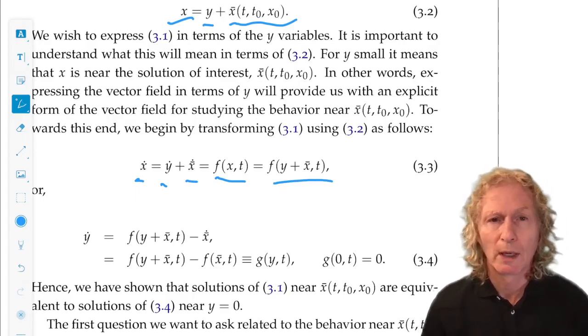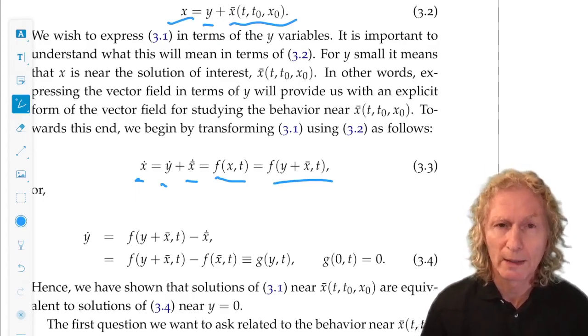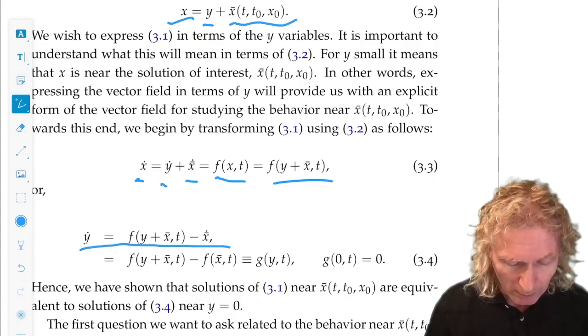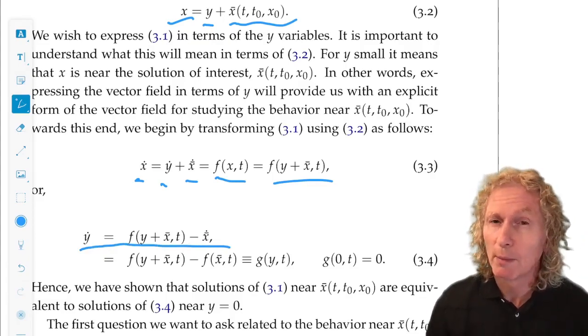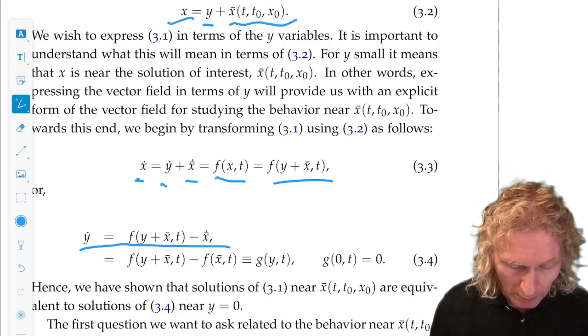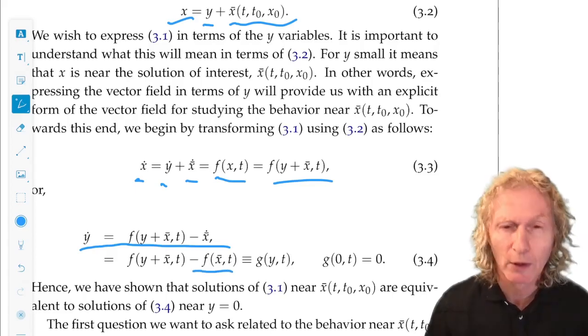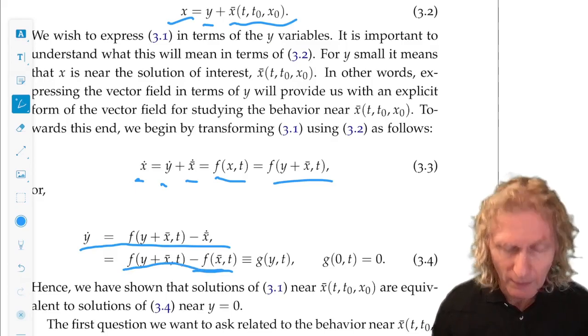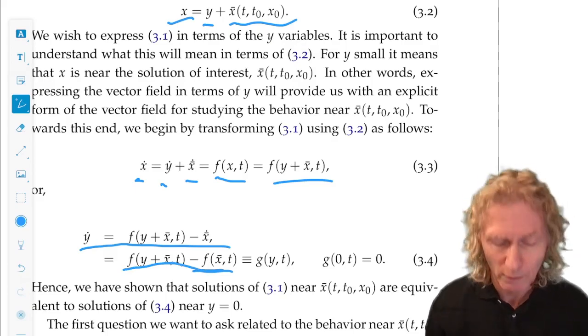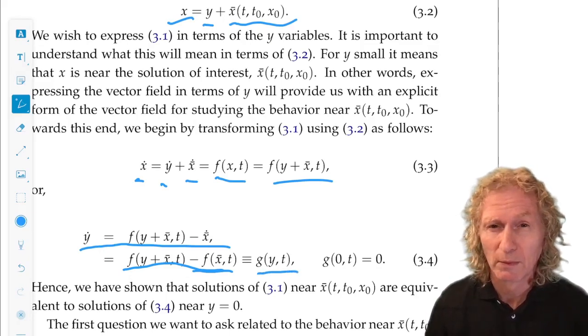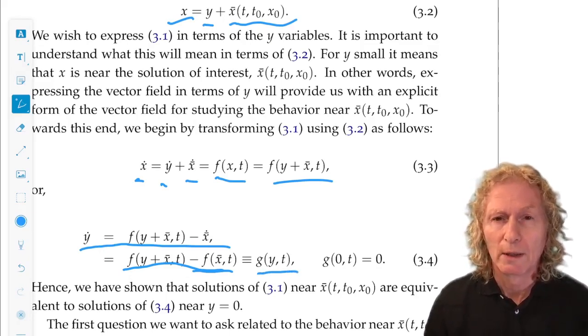Now we want to isolate ẏ, and we do it this way. We have ẏ equals f(y + x̄, t) minus x̄̇. But x̄ is a solution of the equation, so x̄̇ is f(x̄, t). And this we define as a new function, just for convenience, g(y,t). x̄ is known, so it's g(y,t).